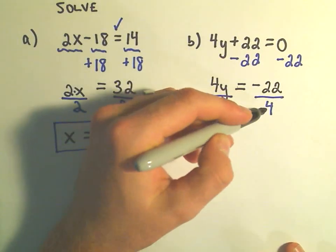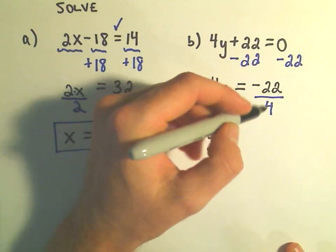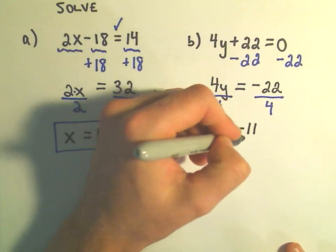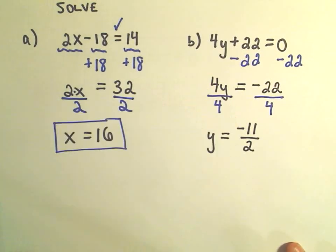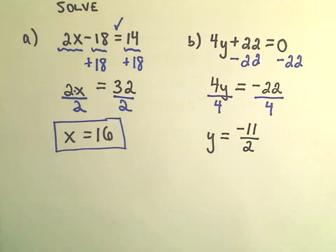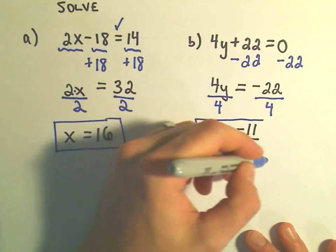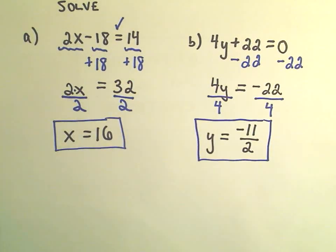Negative 22 over 4, I think we can reduce that. Those are both even. So certainly we could make it negative 11 over 2. And since this doesn't reduce any further, I would just stop right there. You could turn this into a decimal. I guess that's negative 5.5.